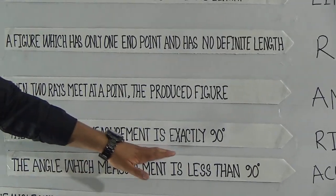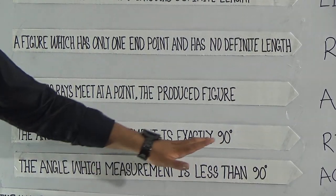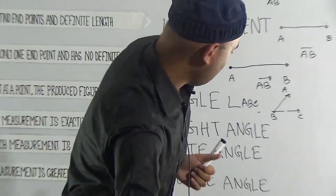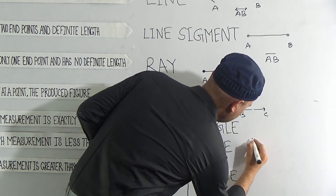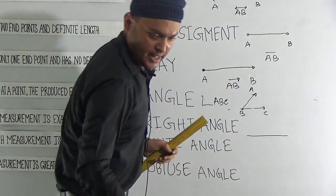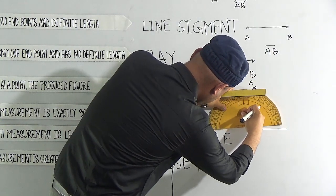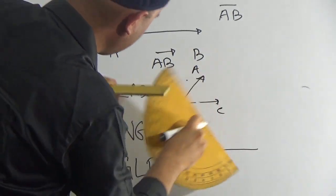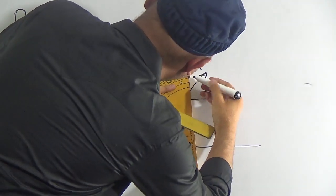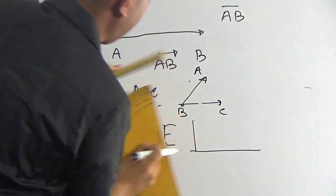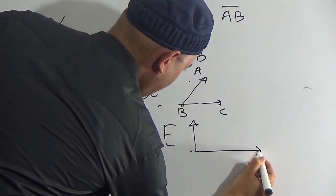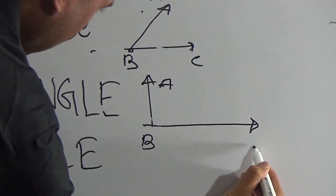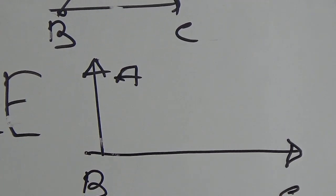Right angle is an angle which measurement is exactly 90 degrees. Then it is called the right angle. If we draw a ray and put the protractor on this point, it will be a right angle. If we consider this is A and B then C, ABC is a right angle.